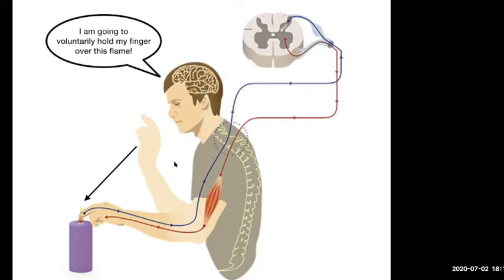It doesn't have to be voluntary though. You could have the opposite thing where — ouch — your finger's hurting and there's going to be an automatic spinal reflex to take it off. But you could, if you want, keep it there. Sometimes you do.